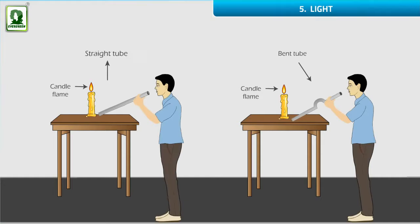When the pipe is straight, we can easily see the lit candle. But not when the pipe is bent.